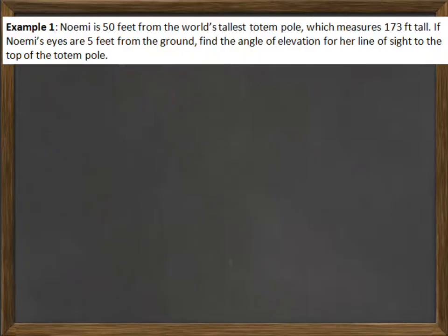Alright, so let's look at an example. Noemi is 50 feet from the world's tallest totem pole, which measures 173 feet tall. If her eyes are 5 feet from the ground, find the angle of elevation for her line of sight to the top of the totem pole. So obviously the first thing is we need to draw a picture. That's the main reason we're doing this video is because you need to get used to taking the words and figuring out what picture it's talking about.